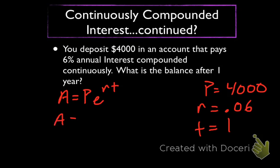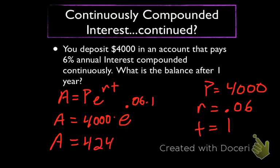All right. So A equals 4,000 times E raised to the .06 times 1. All right. And that you should be able to put right into your calculator. 4,000 times E to the .06. And what do you get for A? What did you say? 4,000. 4,247.35. Okay. 4,247.35.